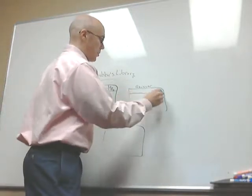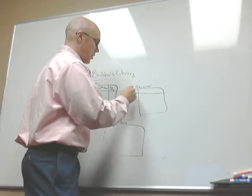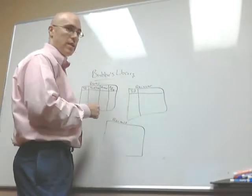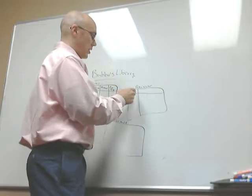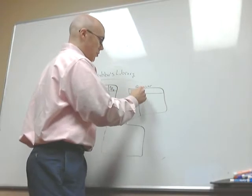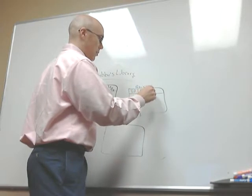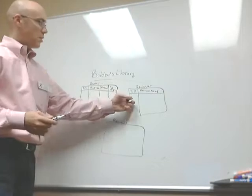The next table, the Reviewer table, is even simpler — it's just going to consist of two columns. One will be the ID, a unique auto-incremented ID for this table, and then we'll just have the reviewer name.